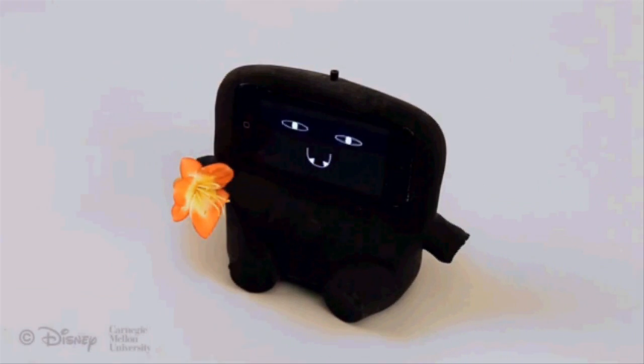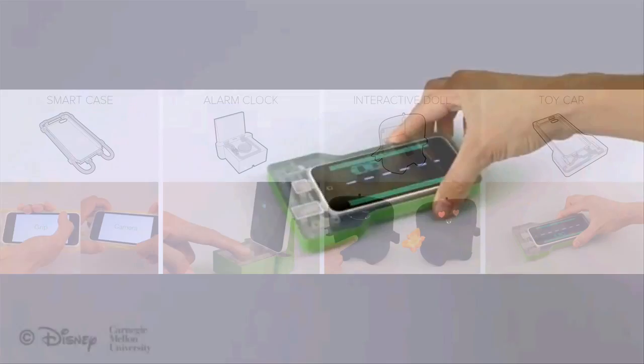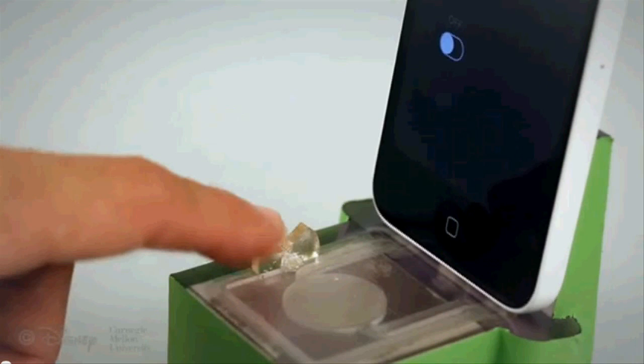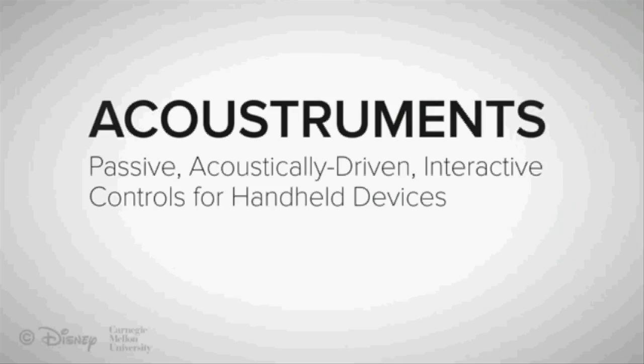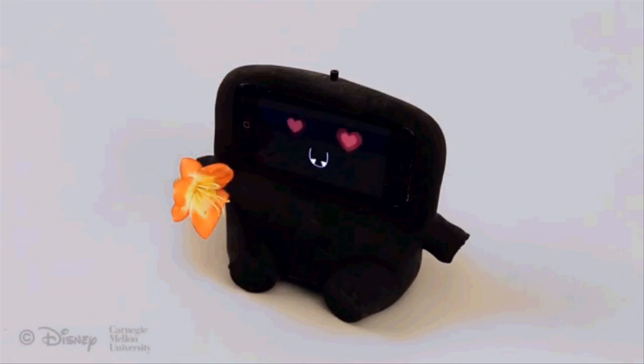Researchers at Carnegie Mellon University and Disney Research have invented a unique type of accessory called Acoustomance for smartphones and other gadgets. They have come up with a way of utilizing ultrasonic waves to make smartphones even smarter.